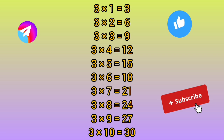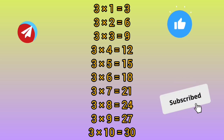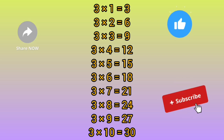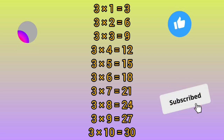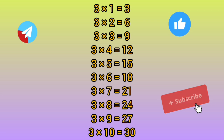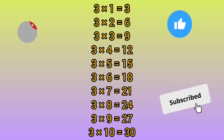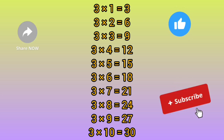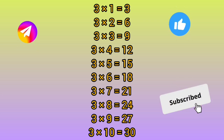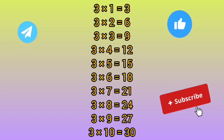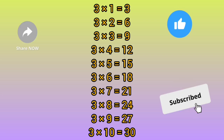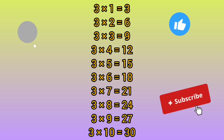Three sevens are twenty-one, three eights are twenty-four, three nines are twenty-seven, three tens are thirty.